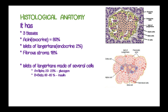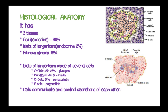Beta cells occupy 60% to 65% and they secrete insulin. Delta cells secrete somatostatin and occupy 5%, and the F cells secrete pancreatic polypeptide. Fibrous stroma occupies 18%. The cells in the islets of Langerhans communicate and control secretions of each other, and in human beings we have 1 to 2 million islets of Langerhans.